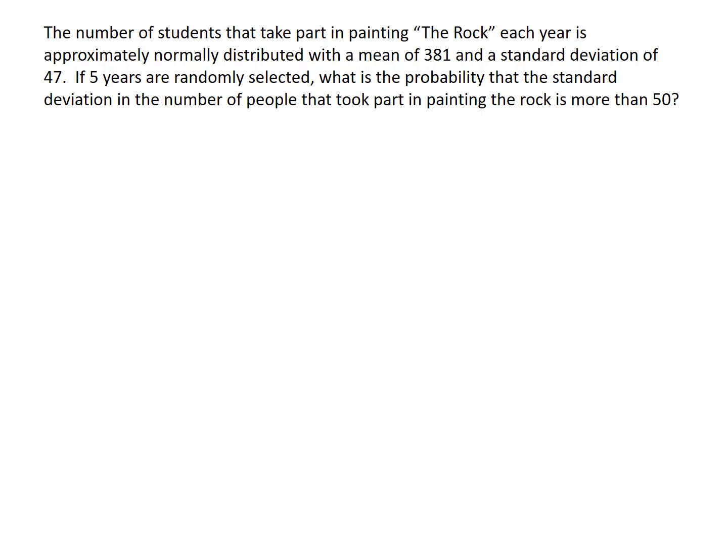For our last example, we're talking about painting the rock. In five randomly selected years, what's the probability that the standard deviation in the number of people that took part is more than 50? The standard deviation for those five years is a sample standard deviation — that's s, not sigma. We want the probability that s is greater than 50. That's the exact same thing as asking what's the probability that s-squared is bigger than 50-squared, which would be 2,500. The probability that the standard deviation is bigger than 50 equals the probability that the variance is bigger than 2,500 — they are the same event.